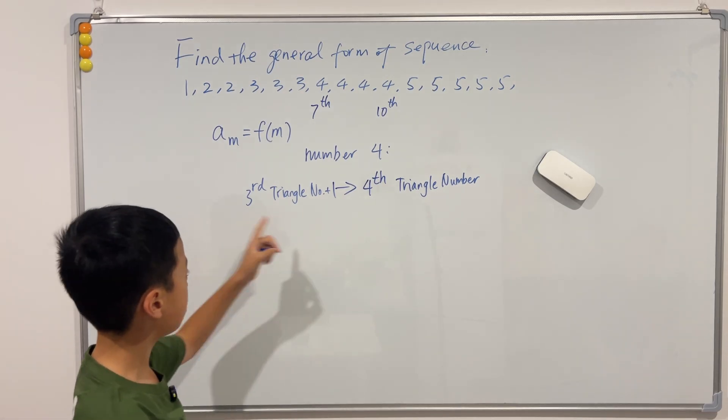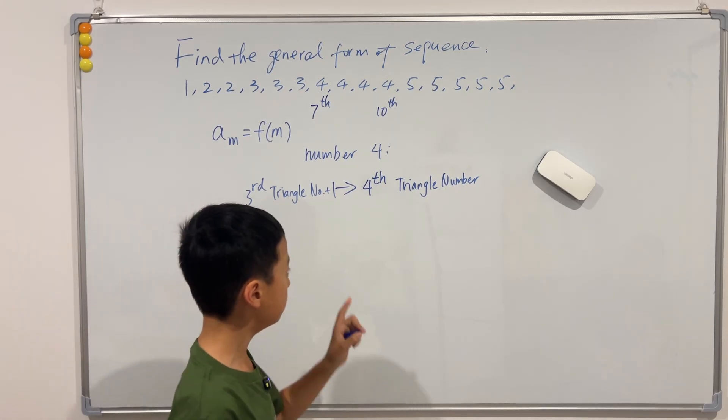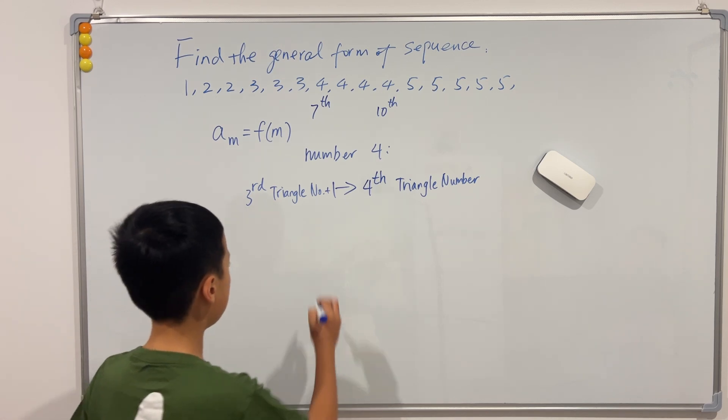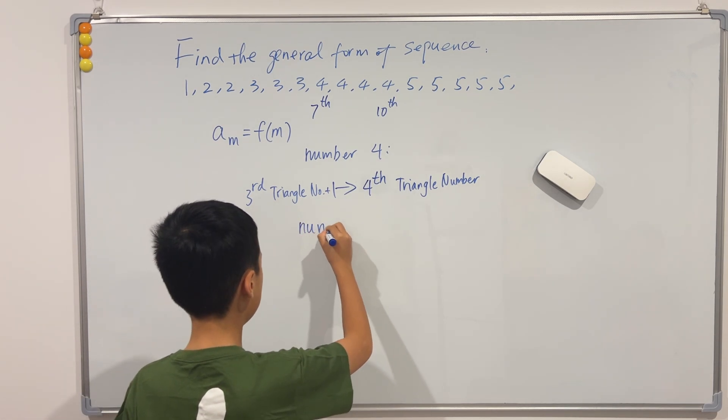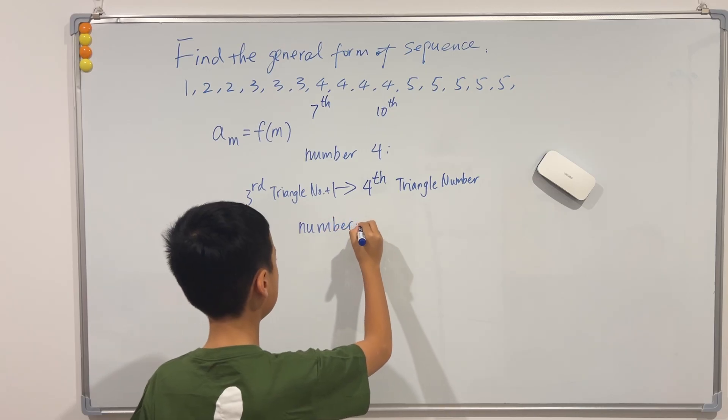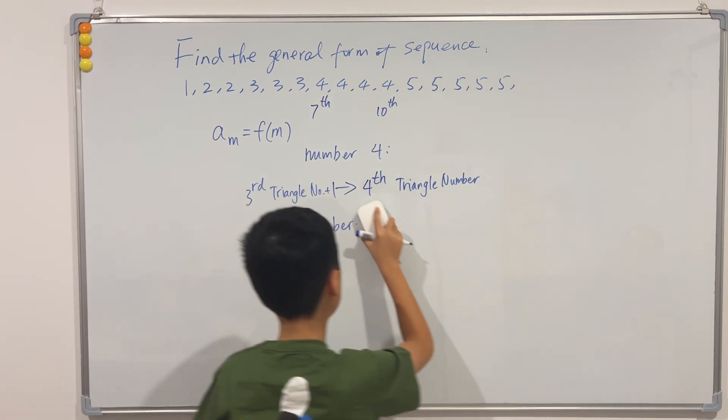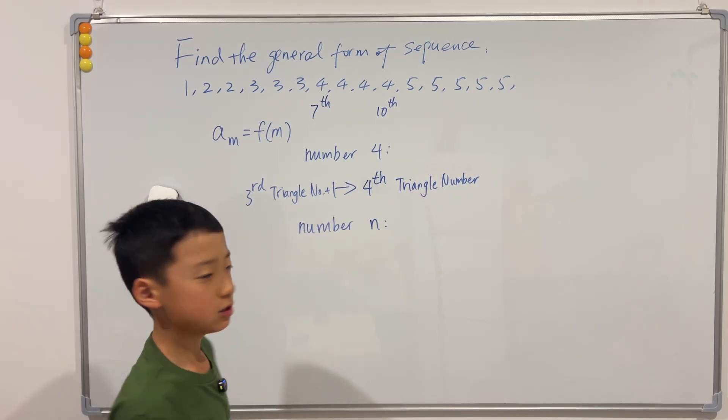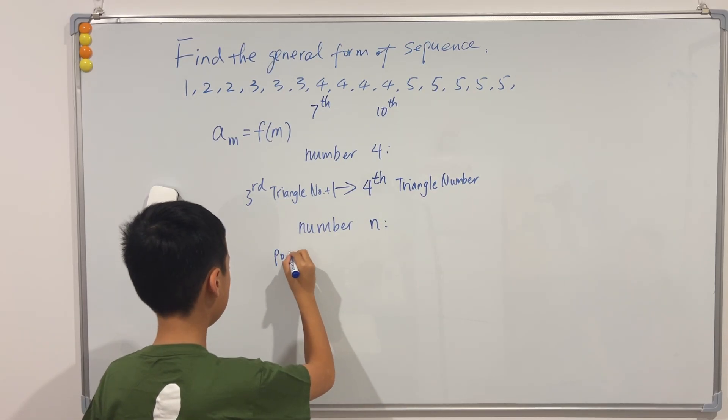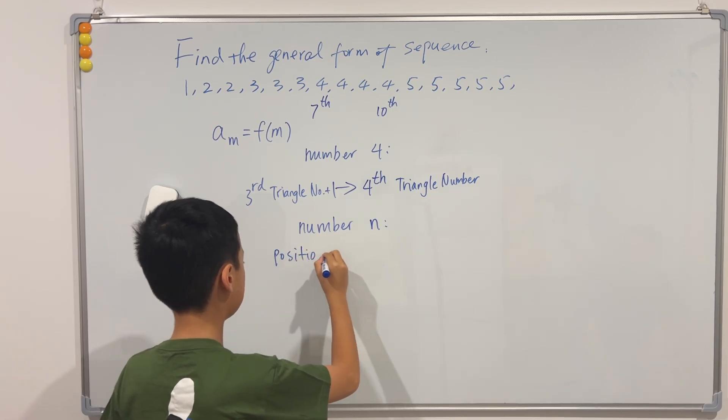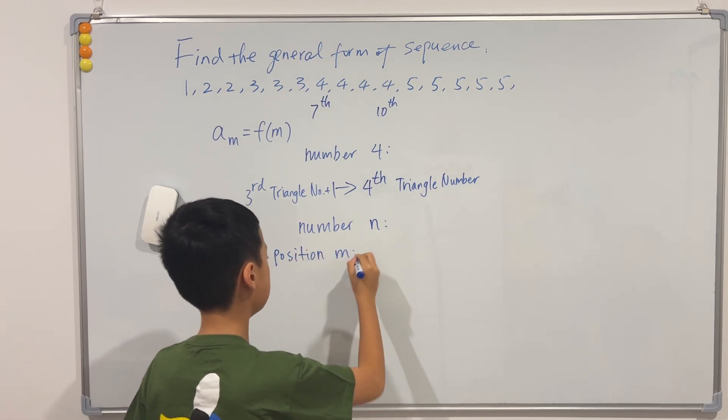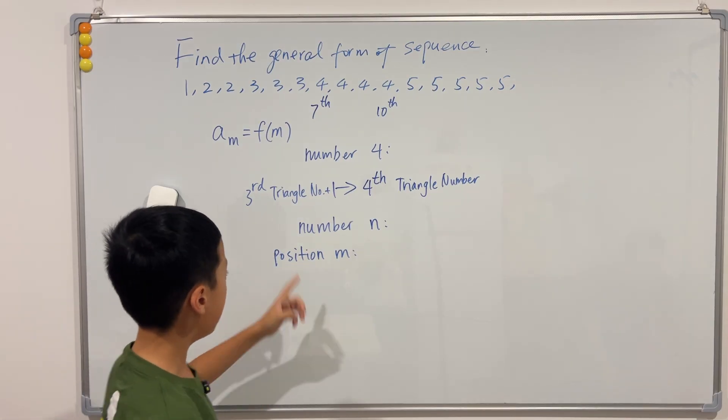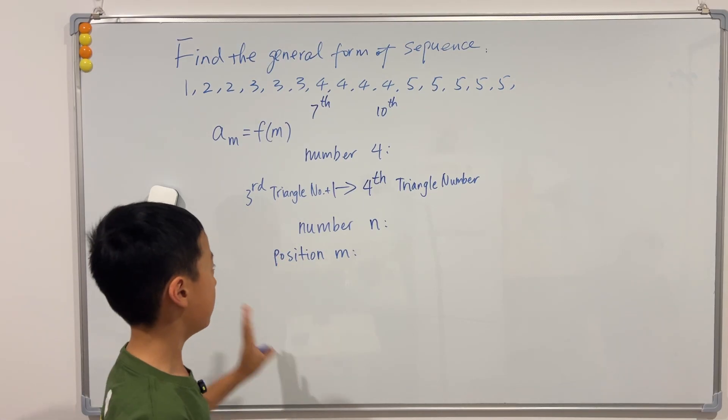To the fourth triangular number. Now if we try and generalize this with a number n such that we have a position m, the position ranges from the n minus one triangular number plus one.